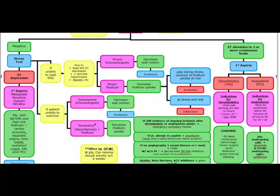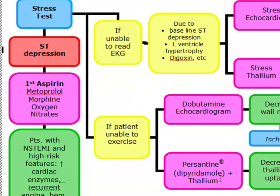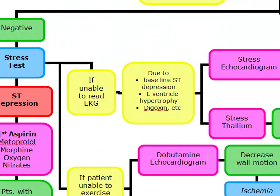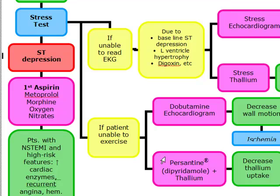If a patient is unable to exercise, you're going to do one of two things: either a dobutamine echocardiogram or persantine (dipyridamole) and thallium. If the dobutamine echocardiogram shows decreased wall motion, that means ischemia. If the persantine dipyridamole and thallium test shows decreased thallium uptake, that also means ischemia.